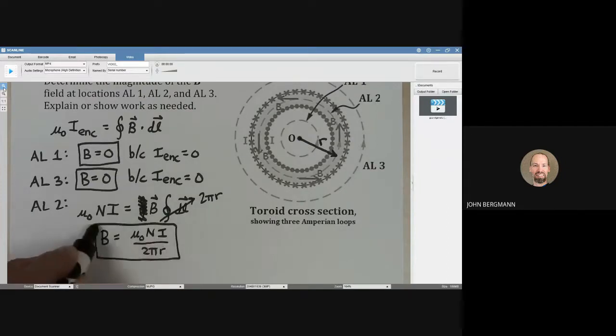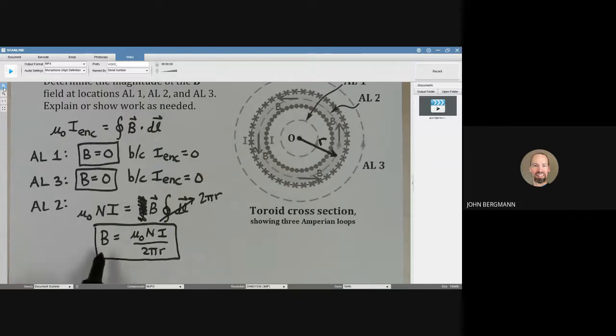You can see for a toroid within the toroid the magnetic field is not quite constant. It does depend on how far away we are from the center of the toroid according to this r right here in the denominator. You might remember that for a solenoid particularly an ideal solenoid it didn't matter where we were within the solenoid the magnetic field was constant. That's not quite the case with a toroid.